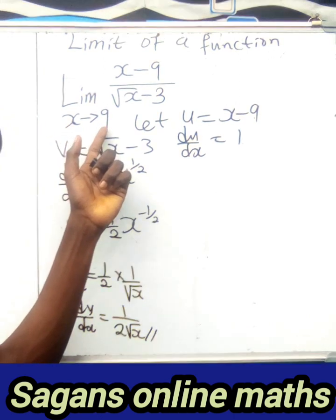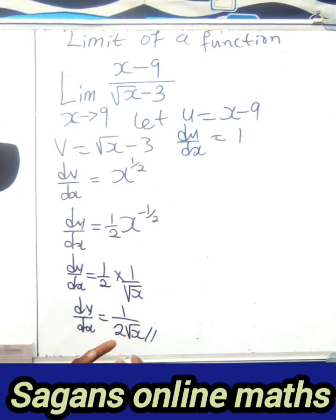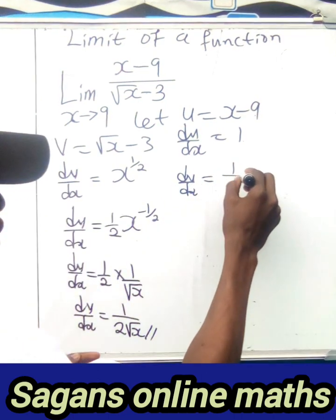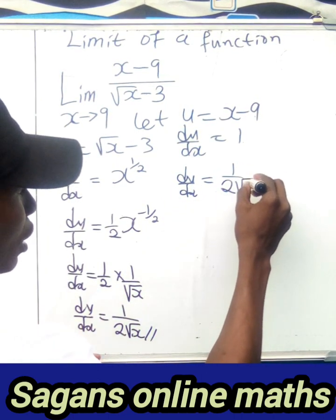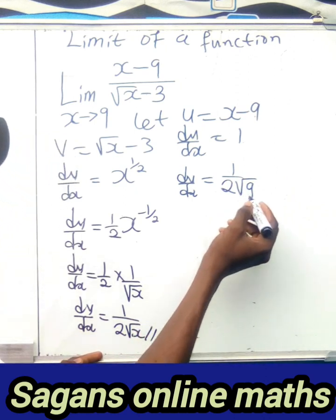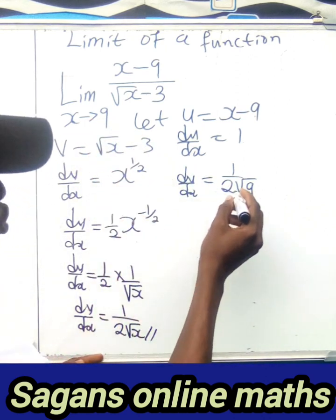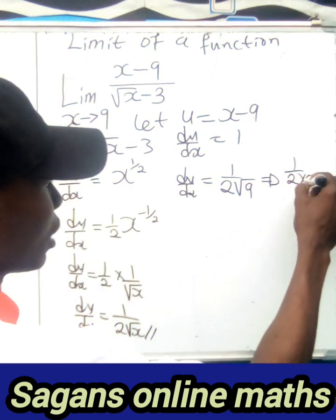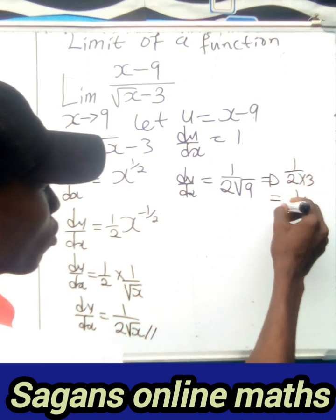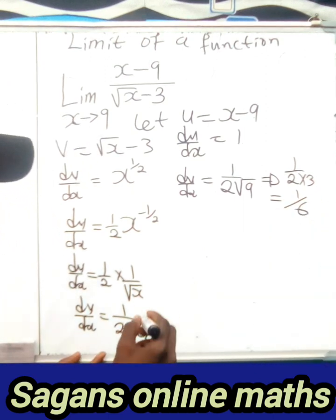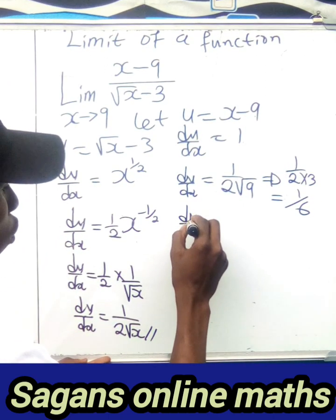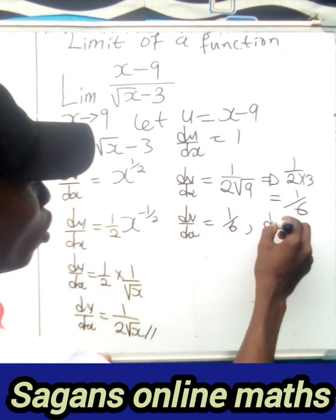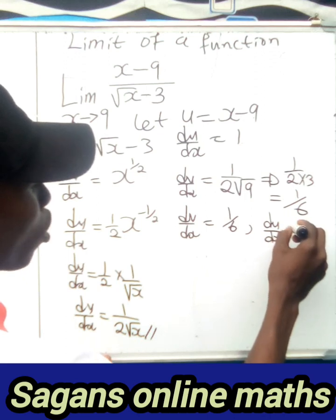When x tends to 9, we substitute x equals 9 into dv/dx: dv/dx equals 1 over (2 times √9) equals 1 over (2 times 3), which equals 1/6. So dv/dx equals 1/6 and du/dx equals 1.